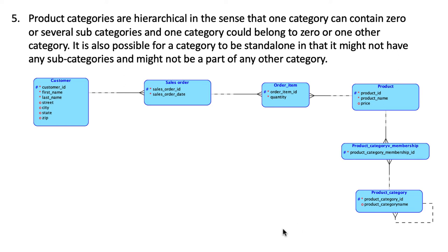So our next business rule says product categories are hierarchical in nature in the sense that one category can contain zero or several subcategories and one category could belong to zero or one other category.